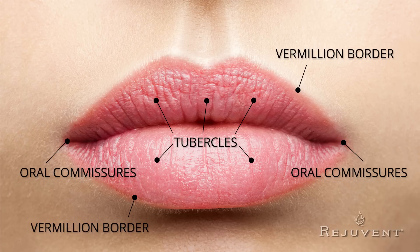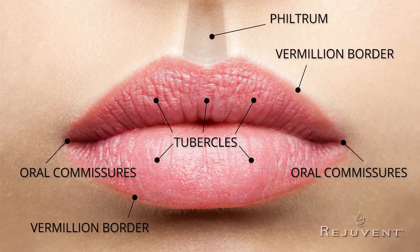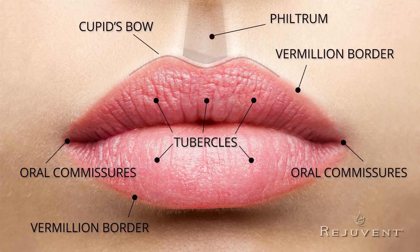With age and volume loss, the commissures can start to spread out and become wider. The small depression that runs from the midline upper lip to the base of the nose is referred to as the philtrum. This comes from the ancient Greek phrase for love potion, because the Greeks found the philtrum to be a sexually attractive region of the face. The curved border of the upper lip centrally is referred to as Cupid's bow.